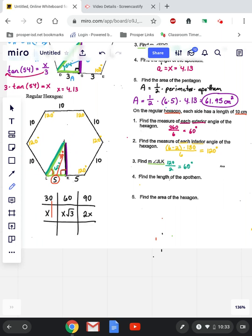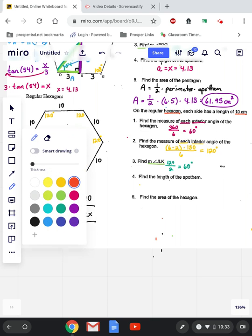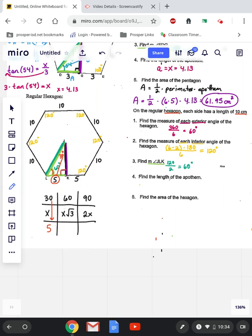And 5 is all the way across from 30. So underneath 30, I'm going to put a 5. That tells me that X equals 5.